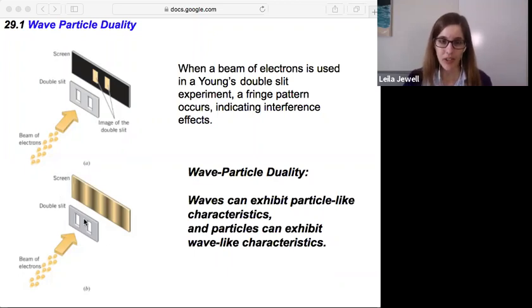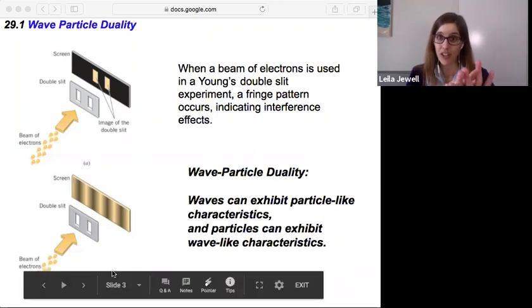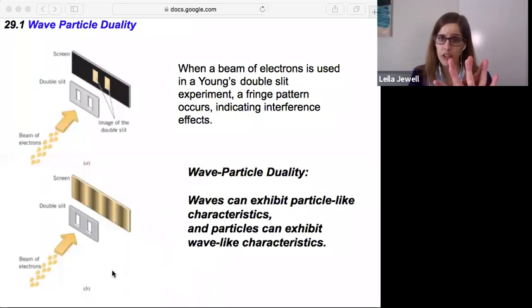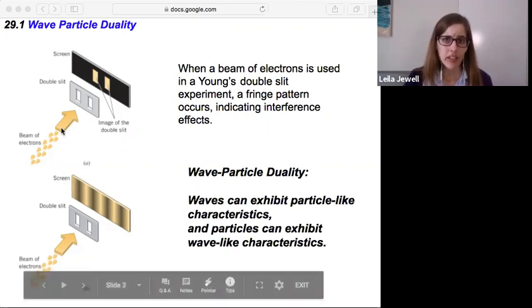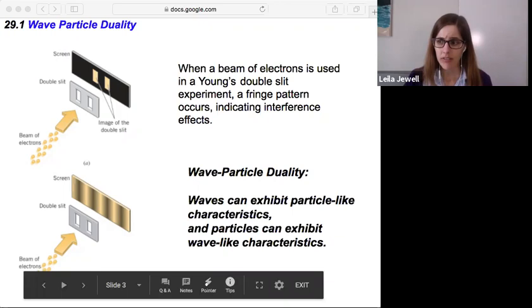The conclusion here is that even though electrons are particles, they can exhibit wave-like characteristics, where the electrons coming through the double slit can interfere with each other to produce this pattern of bright and dark spots on the screen. Similarly, waves can also exhibit particle-like characteristics.